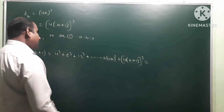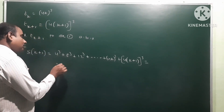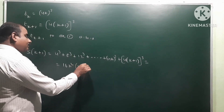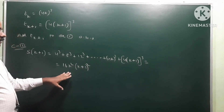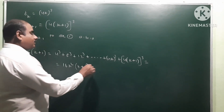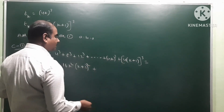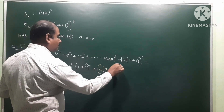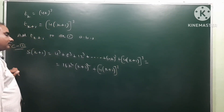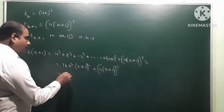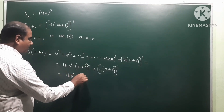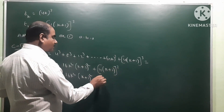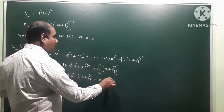The RHS of equation 1 is 16k²(k+1)². Adding the (k+1)th term, which is 4(k+1) whole cube, we get 16k²(k+1)² + 64(k+1)³.